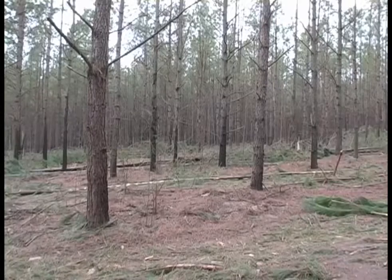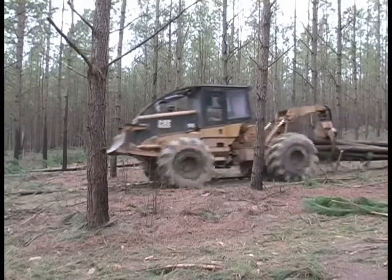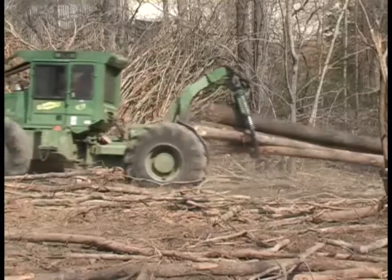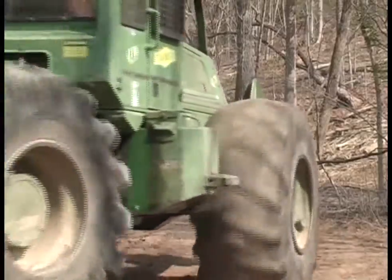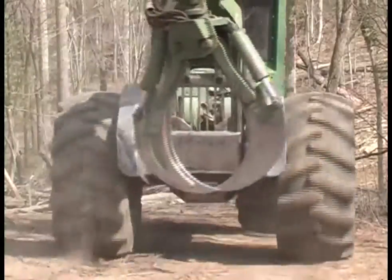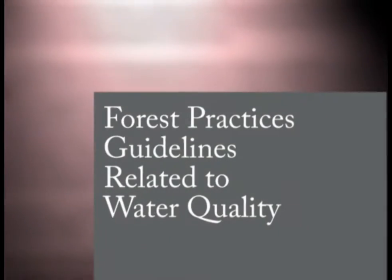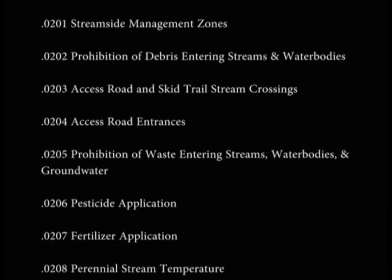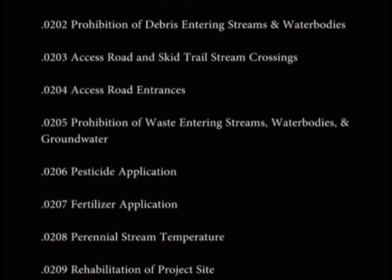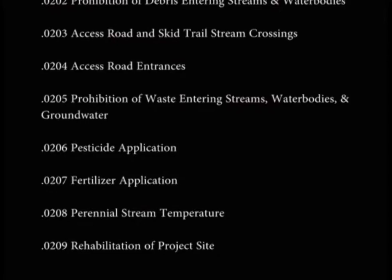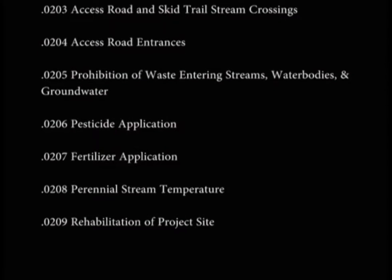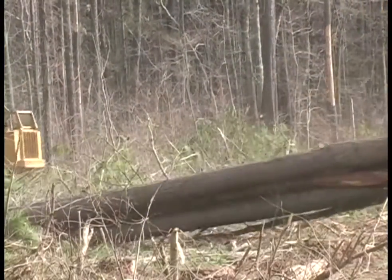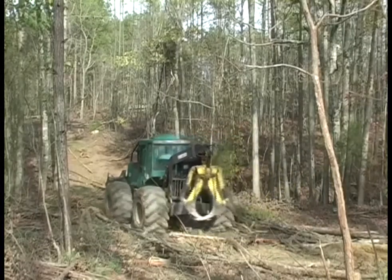On any logging job, the greatest potential for water quality problems usually centers on skid trails. This is because of the bare soil that results from dragging the logs or trees along the ground, and the repeated passes made by heavy equipment. To address these and other water quality concerns, North Carolina developed the Forest Practices Guidelines related to water quality, commonly known as the FPGs. These rules promote the protection of water quality during forestry activities, and there are nine sections. Even though all nine sections apply to a forestry operation, at least two of the FPGs specifically mention skid trails. One tool that you can use to help comply with the FPGs are Best Management Practices, or BMPs. This video briefly outlines some BMPs that you may want to use for your skid trails.